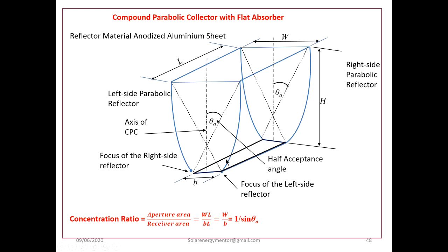And then the right side parabolic reflector. So it consists of two parabolic reflectors which are truncated. The focus of the left parabolic reflector is here and the focus of the right side reflector is here. The line joining the extreme edge and these two points gives an angle called the acceptance angle of the collector. Theta-a is the half acceptance angle of the CPC, and this is the axis of the CPC.